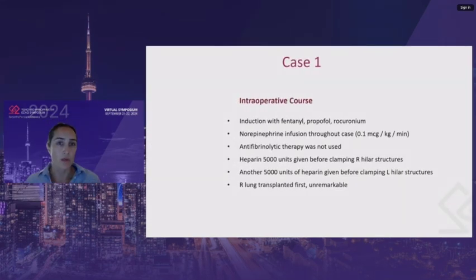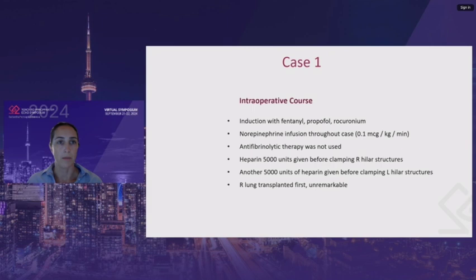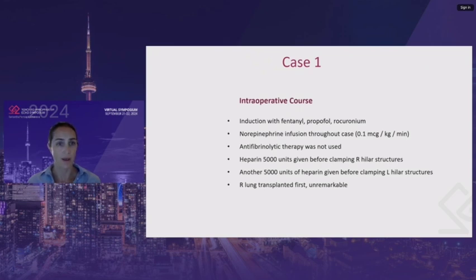The intraoperative course starts off well. There's induction with fentanyl, propofol, and rocuronium, which is unremarkable. Norepinephrine is going throughout the entire case. Anti-fibrinolytic therapy was not used. Heparin was given both before the clamping of the right hilar structures and the left hilar structures. The right lung is transplanted first and goes without complication.